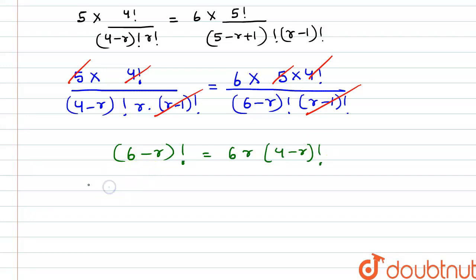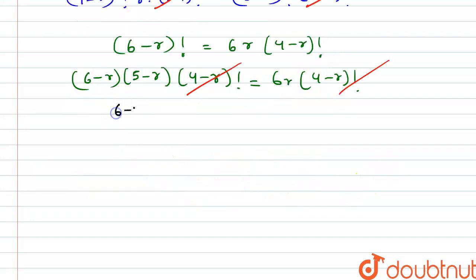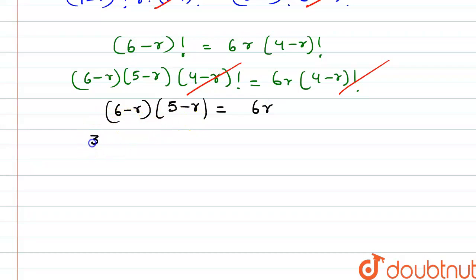If we write 6 minus r factorial as 6 minus r into 5 minus r into 4 minus r factorial, this will be equal to 6r into 4 minus r factorial. Now we can again cancel out 4 minus r factorial from both sides. So we get 6 minus r multiplied by 5 minus r is equal to 6r. Simplifying this, we get 30 minus 5r minus 6r plus r squared is equal to 6r.